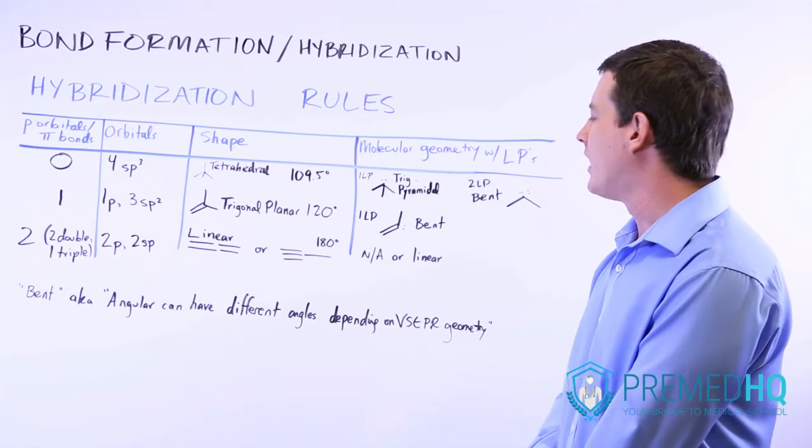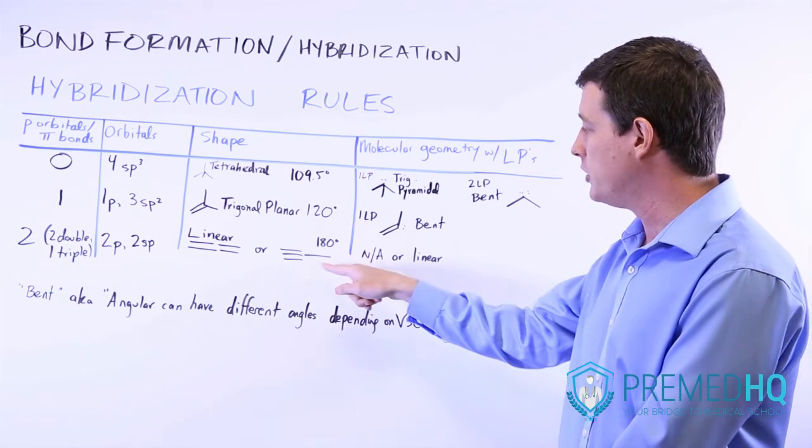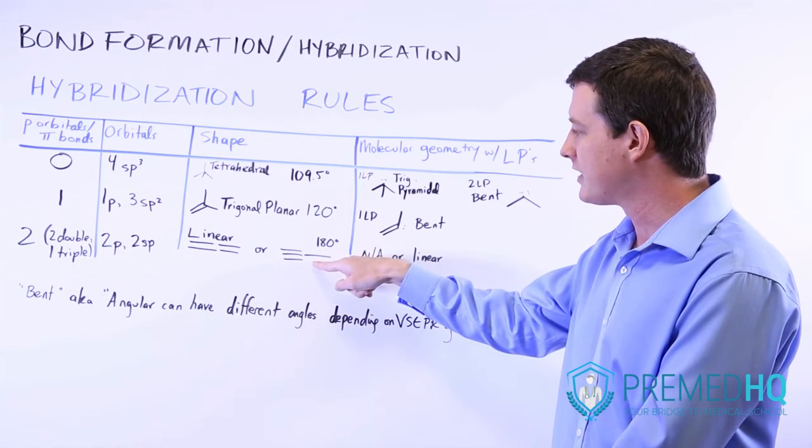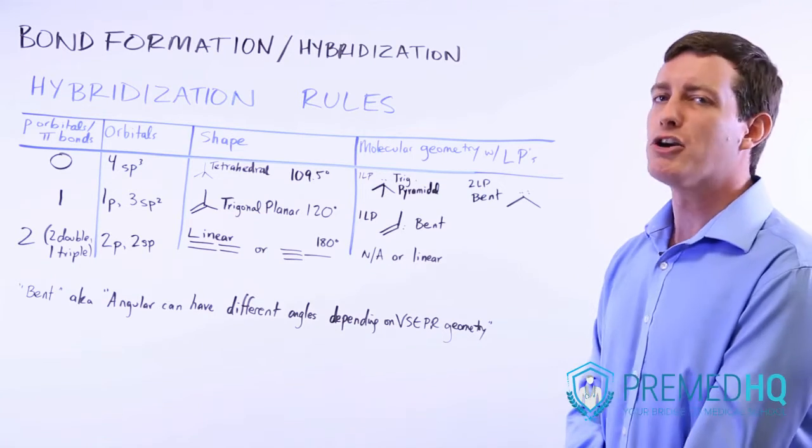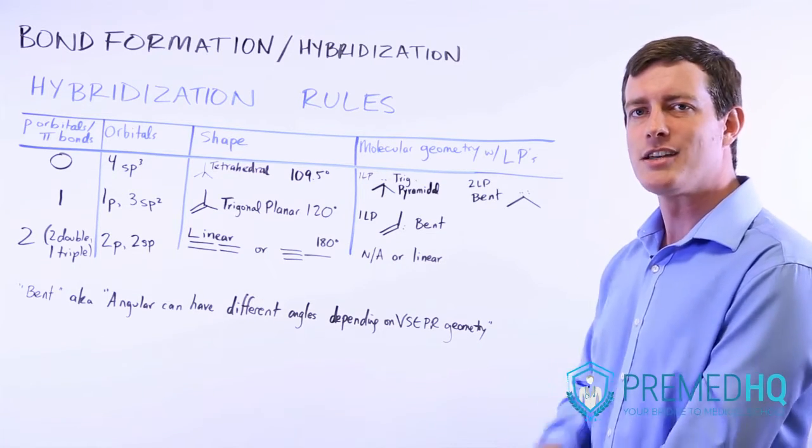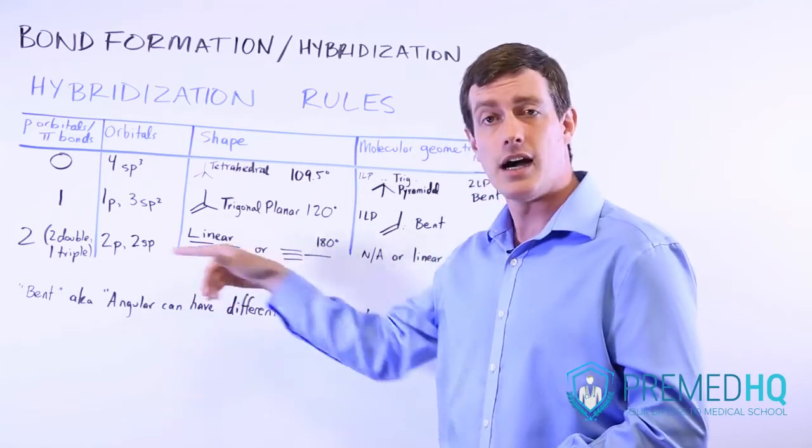And it's unlikely that you'll see one of these with lone pairs. I suppose it's possible that you can have a lone pair replacing this single bond there. And in that case, it would be linear. But you're unlikely to be asked questions on the molecular geometry of something that involves sp hybridization.